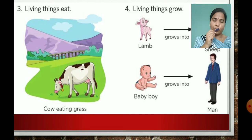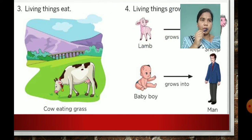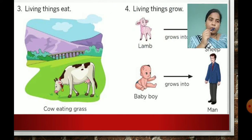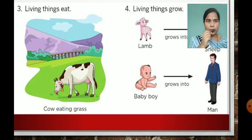Number 4: living things grow. For example, a lamb — a small lamb — grows into a sheep. Then a baby boy grows into a man. So in this way, living things grow. So to summarize: living things breathe, living things move, living things eat, living things grow — like a lamb, like a baby boy.